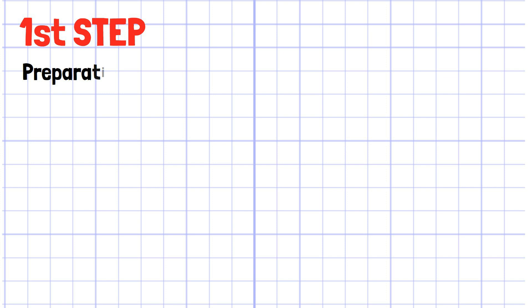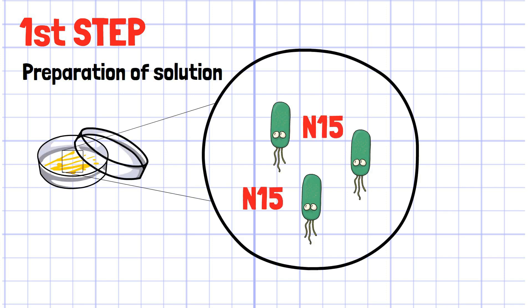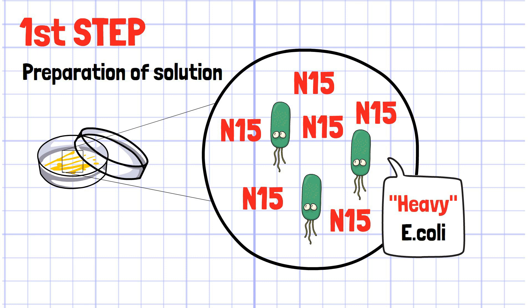The first step is the preparation of solution. First, they cultured E. coli which is composed of nitrogen-15 in a special medium, not naturally available nitrogen-14. In other words, heavy E. coli was cultured in the first step.